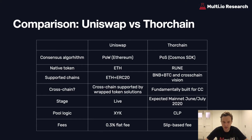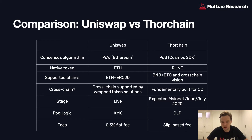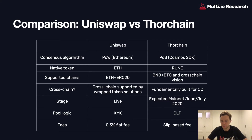Uniswap supports ETH and ERC20 tokens. ThorChain, on the other hand, supports BNB, BTC, and the entire vision is for it to be completely cross-chain. Uniswap will be able to support cross-chain tokens, however this will be done via wrapped token solutions such as REN. In terms of maturity, Uniswap is probably one of the most famous DEXs and has been tremendously successful — live for over one and a half years, with around 40 to 50 million staked into various pools as of today.